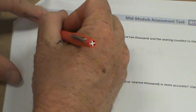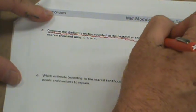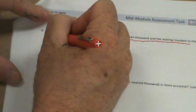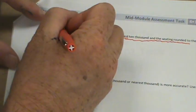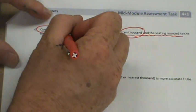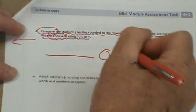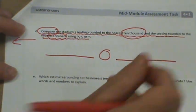Now you're going to have to go back to the problem you just finished. And it says, compare the stadium seating rounded to the nearest 10,000 and the seating rounded to the nearest 100 using greater than, less than, or equal. So we're comparing the 10,000 and the 1,000 that we did on the previous page. So we're going to have a number greater than, less than, or equal to, and another number.